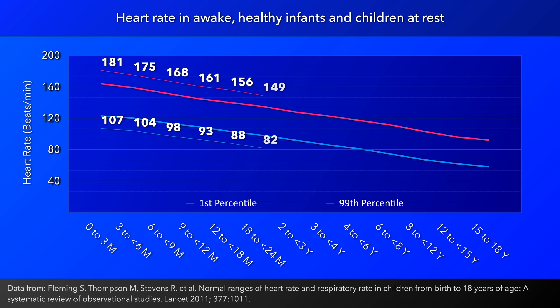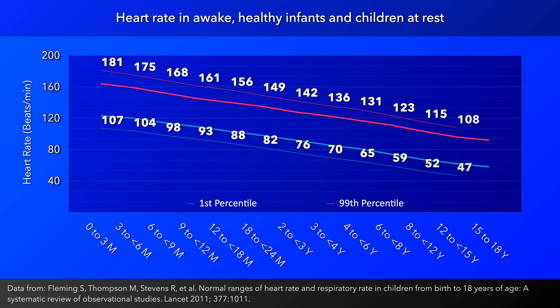From 0 to 3 months of life, the lower limit for heart rate was shown to be 107 beats per minute, while the upper limit was 181. Between 15 and 18 years of age, the lower limit fell to 43 and the upper limit to 104.